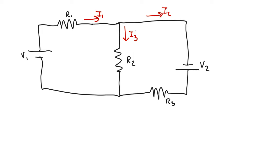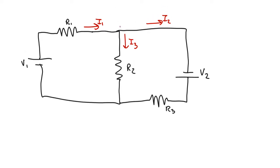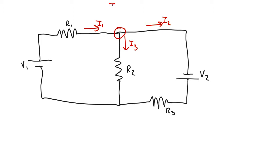Now let's look at the voltages and so we know from currents, the junction law that I1 equals I2 plus I3 and we need to pick some loops.